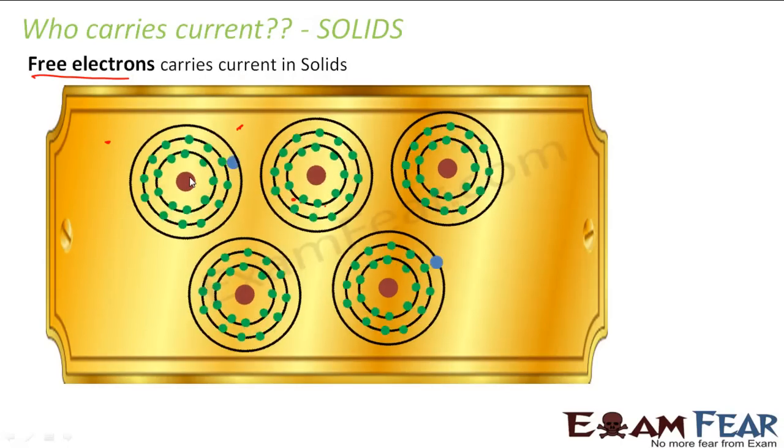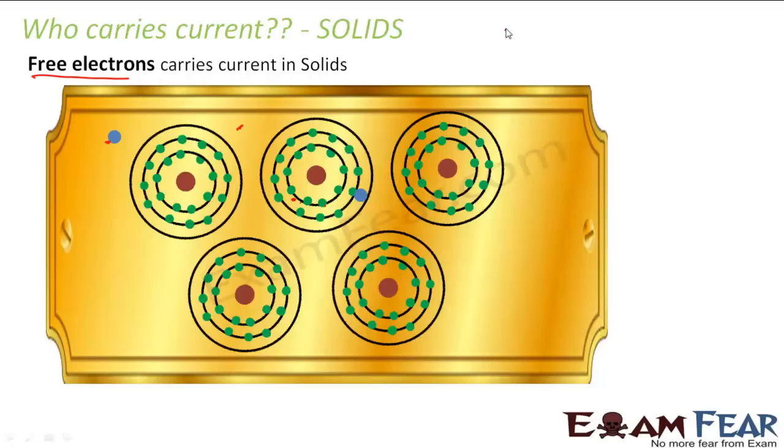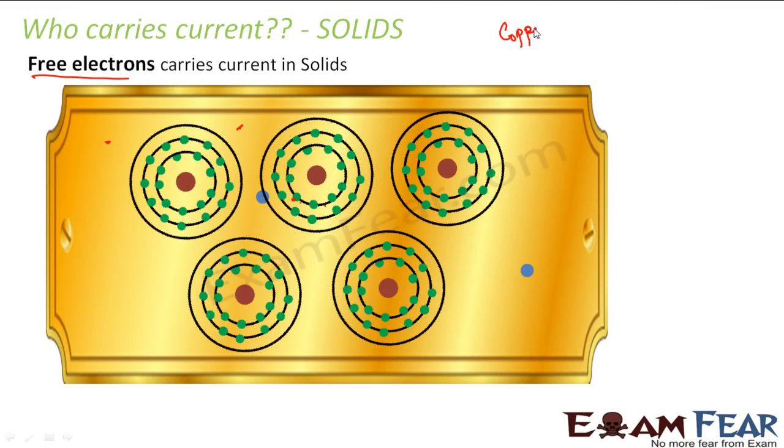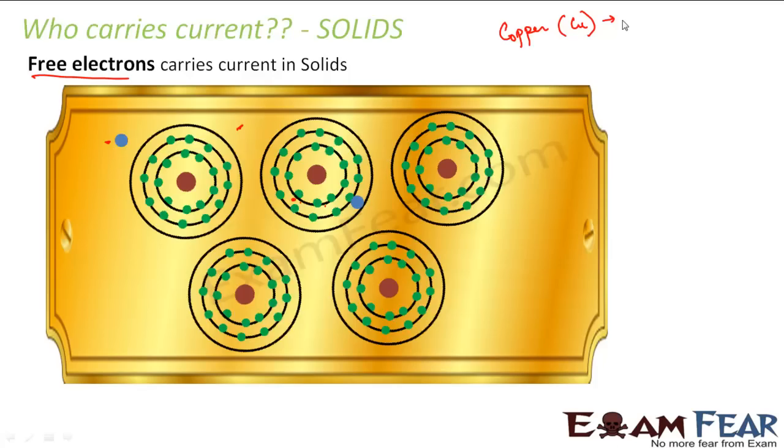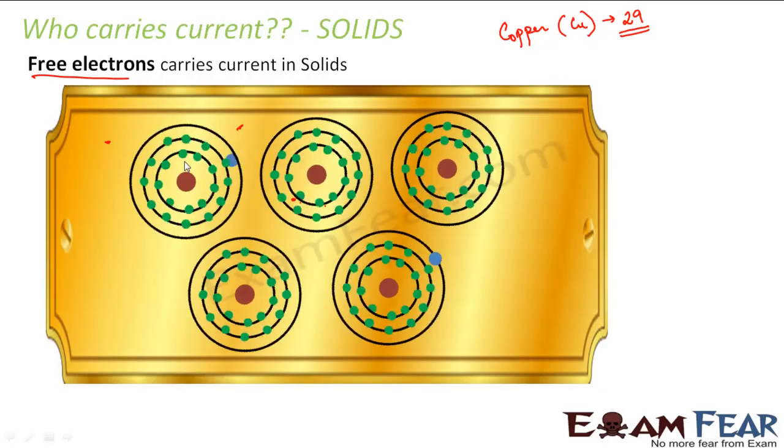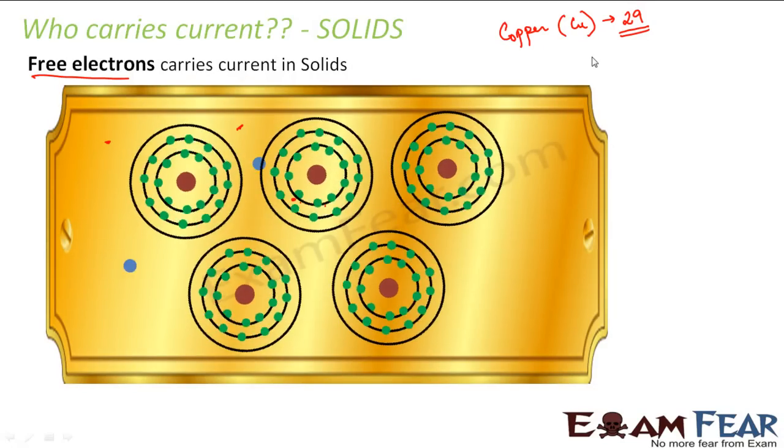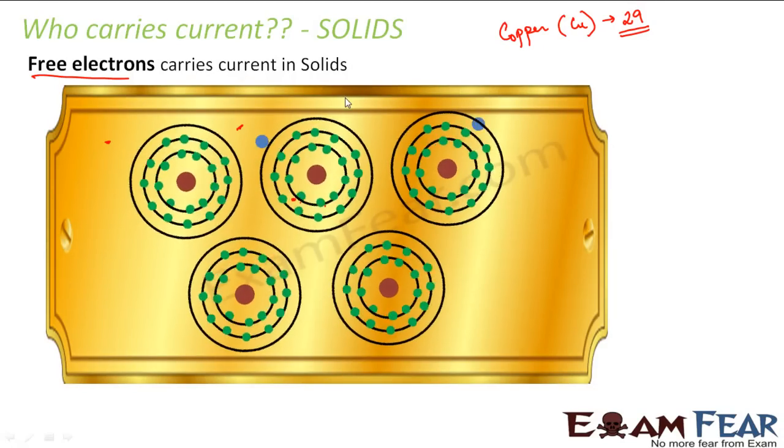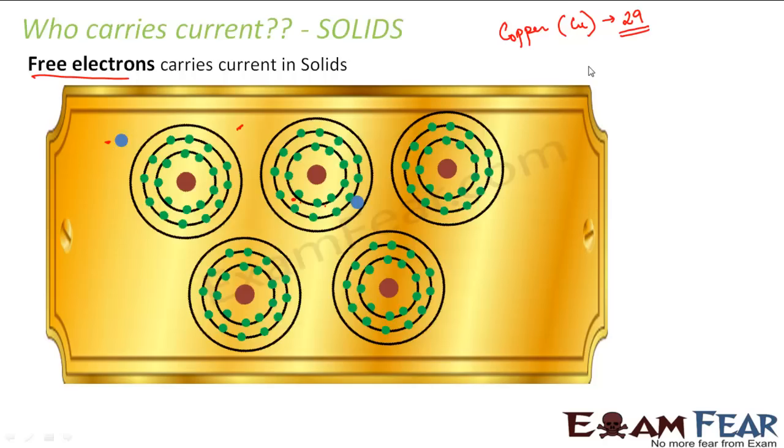Now you look at this diagram very carefully. When I talk about any metal, let us take any example - for example, let us say a metal, say copper. Let me consider copper, Cu. You have the atomic - what is the atomic number for Cu? It is 29. So if you write down the electronic configuration of copper, what do you see? In your chemistry you would have studied how to write the electronic configuration for any element, right?